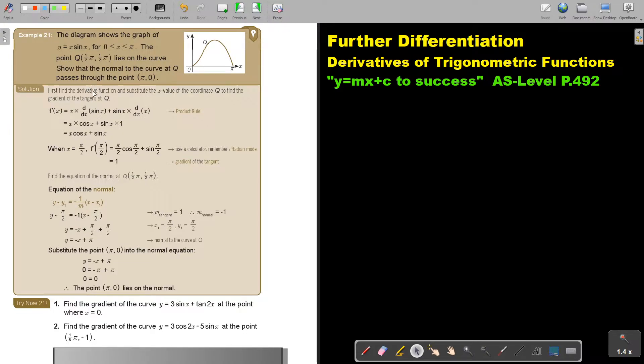First find the derivative function and substitute the X value of the coordinate Q to find the gradient of the tangent at Q. If you look at the function, there's the first one, there's the second one. So I'm going to do the product rule.